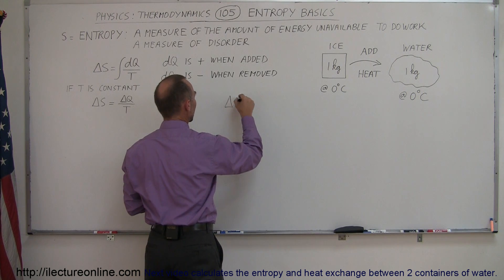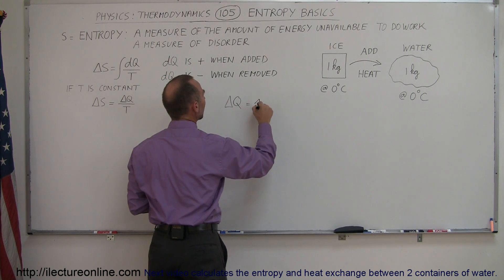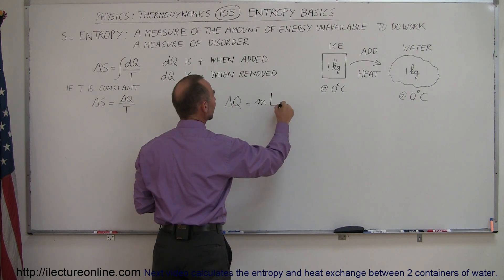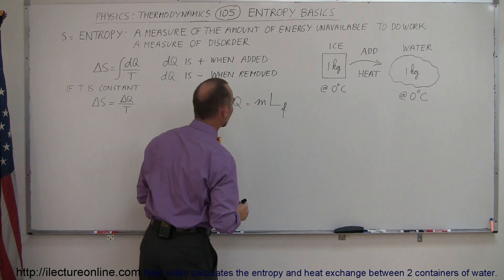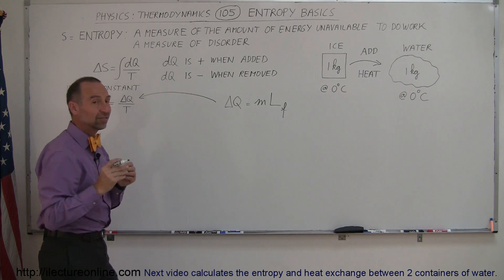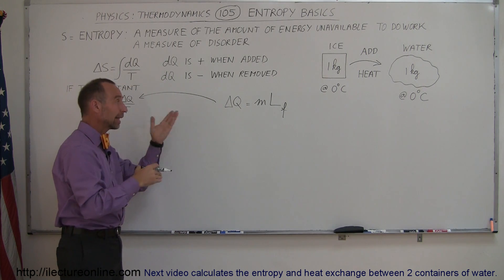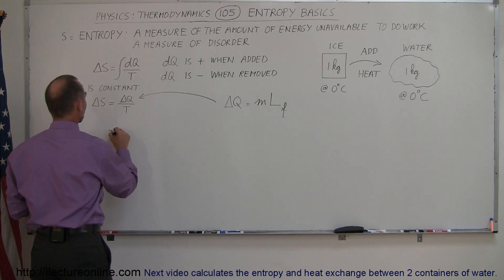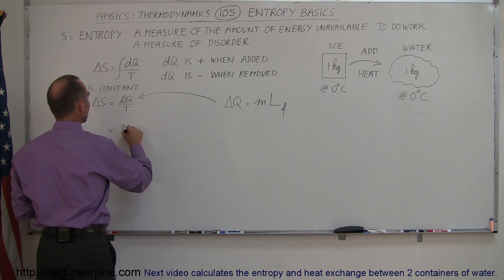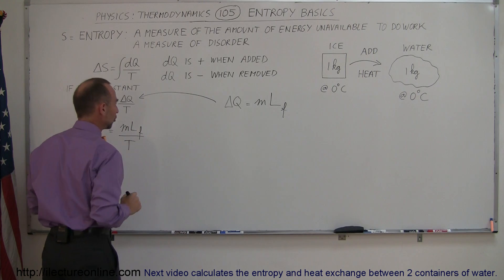Well that is the delta q. Delta q is equal to the mass of the ice times the latent heat of fusion of the ice. So that is the amount that we need to put in there and since we're adding heat to the ice that quantity is positive. So this is going to be equal to the mass of the ice times the latent heat of fusion divided by the temperature at which it occurs.